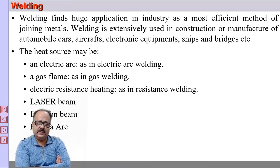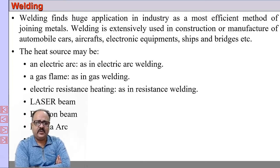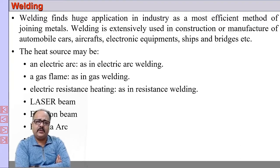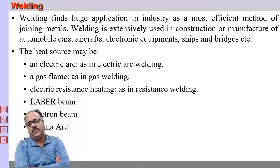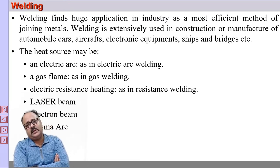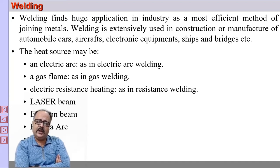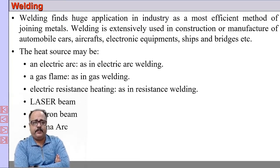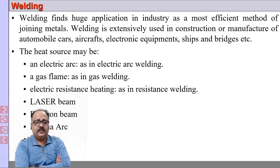Welding finds huge application in industries today. A normal car has more than 10,000 welds. The building industry, aerospace industry, construction industry, and bridge industries all rely on welding as an integral part, as many components must be permanently joined. For example, pipelines carrying oil are welded, and if a weld fails, the disaster can be severe. Nuclear reactors also have welded joints, and a pipe carrying nuclear waste failing can be catastrophic — highlighting the critical importance of welding.